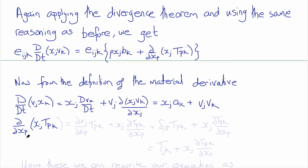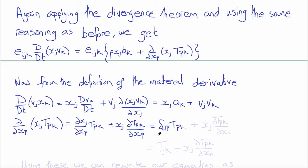Similarly, we can expand the derivative del/del x_p of x_j t_pk using the chain rule to be del x_j/del x_p times t_pk plus x_j times del t_pk/del x_p. Here del x_j/del x_p is delta_jp, so this becomes t_jk plus x_j times del t_pk/del x_p.